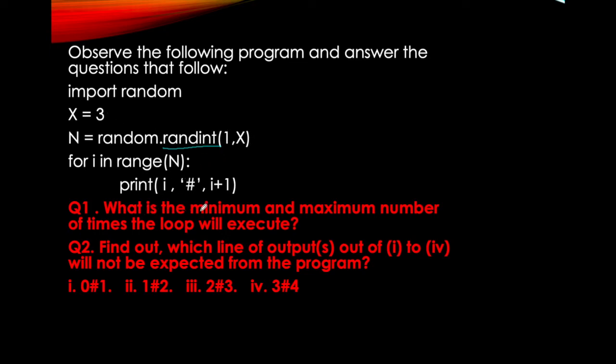And then you can see a loop out here. Now the first question asks what is the minimum and maximum number of times the loop will execute. So I told you randint has both limits inclusive. So 1 will be the minimum value you will be getting out of it, and 3 will be the maximum value you will be getting out of it. So 1 is the smallest value, 3 is the largest. And what are the possibilities? Either N can be 1, or N can be 2, or N can be 3. We don't know what it will be, but it can be any of these 3.